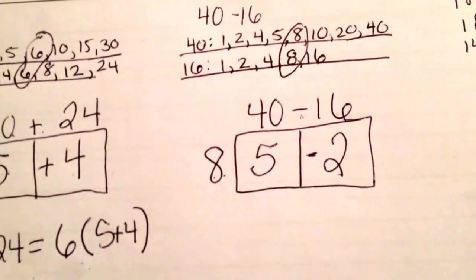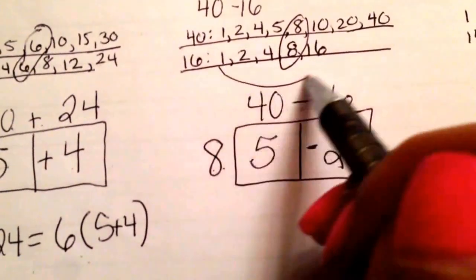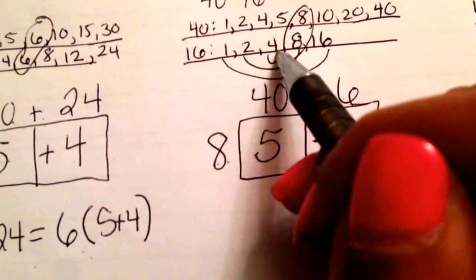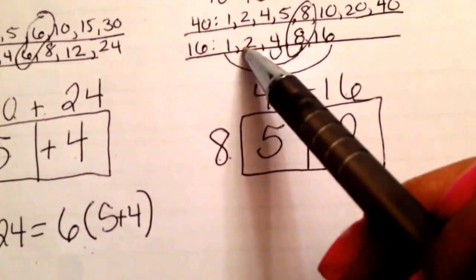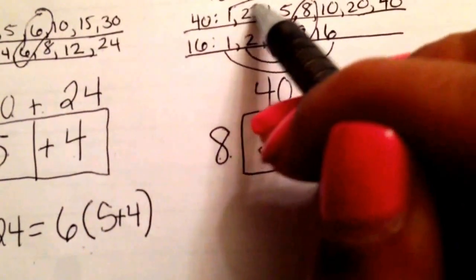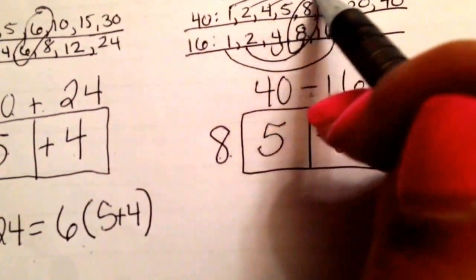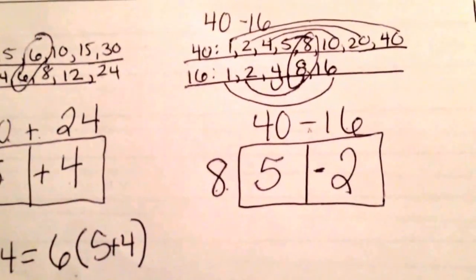As a note, if you cannot remember your times tables, use this as a factor rainbow. Meaning, connect the outsides and the little ones so you can see what numbers make it. You see that 8 times 2 makes 16. Same thing with the other one. 1 times 40, 2 times 20, 4 times 10, and 5 times 8. They're connected together. So that helps you out.